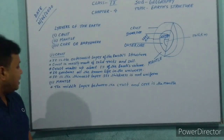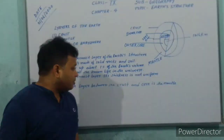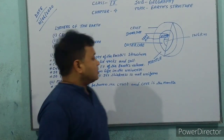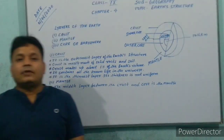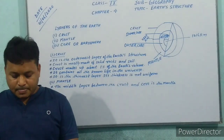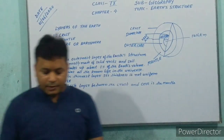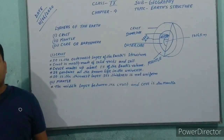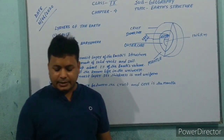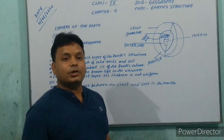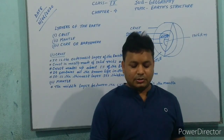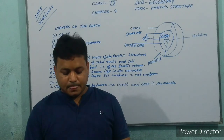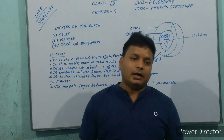Now I will discuss about the mantle. The middle layer between the crust and core is the mantle. The average thickness of this layer is about 2,850 km. About 84% of the Earth's volume is made of the mantle.